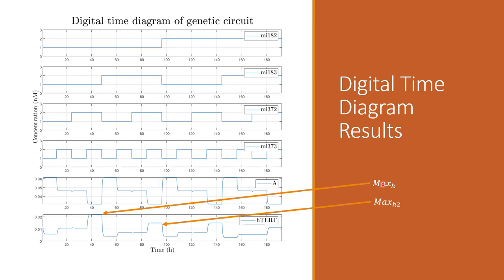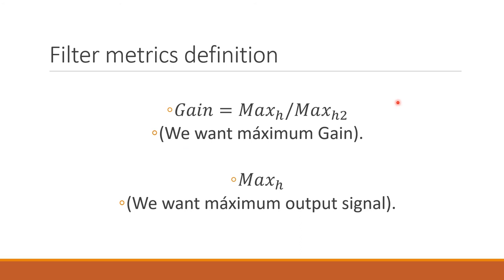And we are going to define two important things. First of all, the max response is basically the maximum hTERT expression in the desired condition, and the secondary maximum is the maximum of the non-wanted condition.